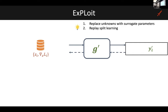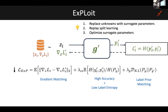In step two, the adversary replicates the split learning process using the surrogate parameters and surrogate models. The adversary takes embeddings Z sampled from the database of embeddings, passes them through the surrogate model G prime, produces surrogate prediction P prime. This, along with the surrogate labels, can be used to compute the loss. By performing backpropagation, we can compute the gradient of this loss. The last step of EXPLOIT is to optimize the surrogate parameters, leveraging key properties of split learning.